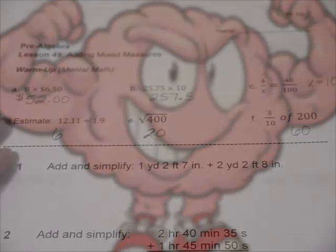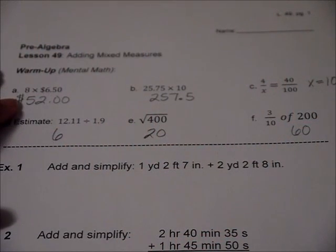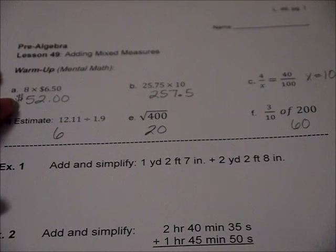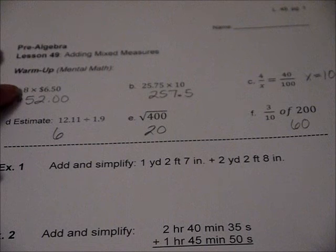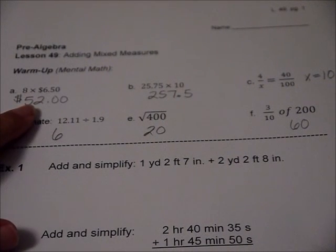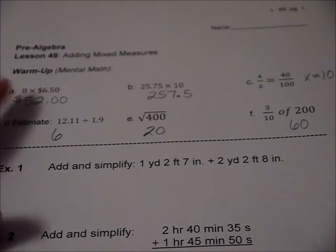Alright, here we go. This one slowed me down, but first I was thinking about okay, fifty cents eight times is four dollars, and six times eight is forty-eight, so it's forty-eight plus four dollars which is fifty-two dollars.